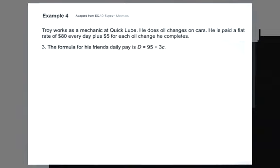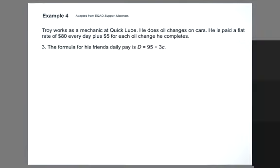Example 4 continued. The formula for his friend's daily pay is d equals 95 plus 3c, where d is his daily pay and c is his number of oil changes. What do the numbers 95 and 3 tell you about his friend's pay?